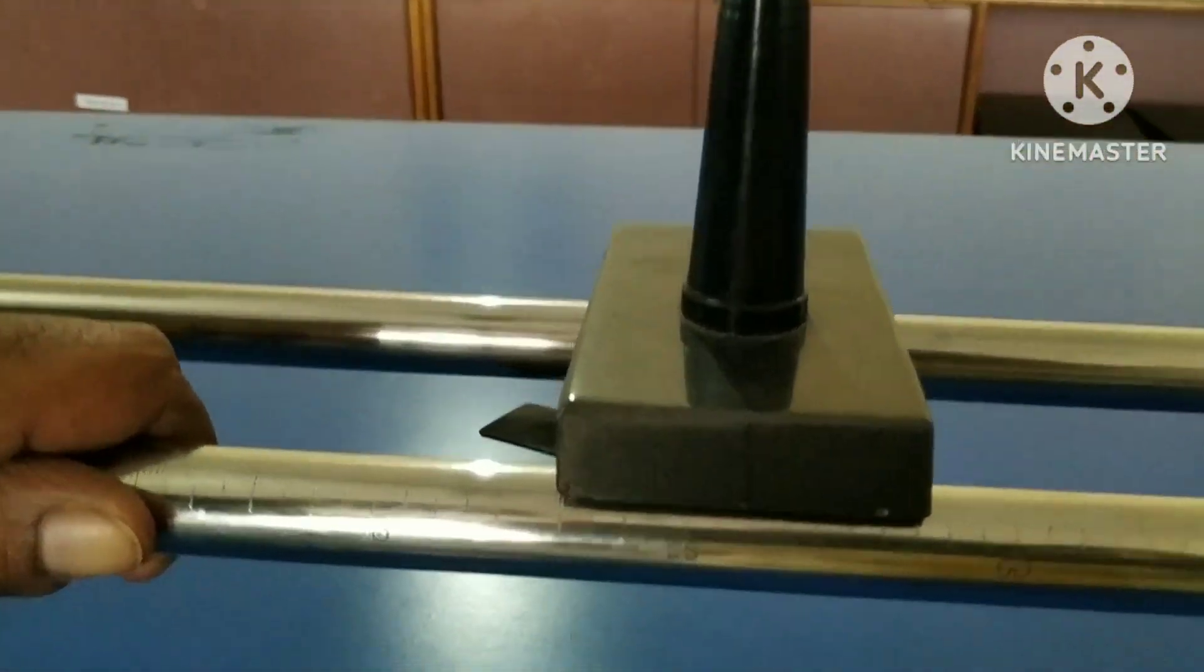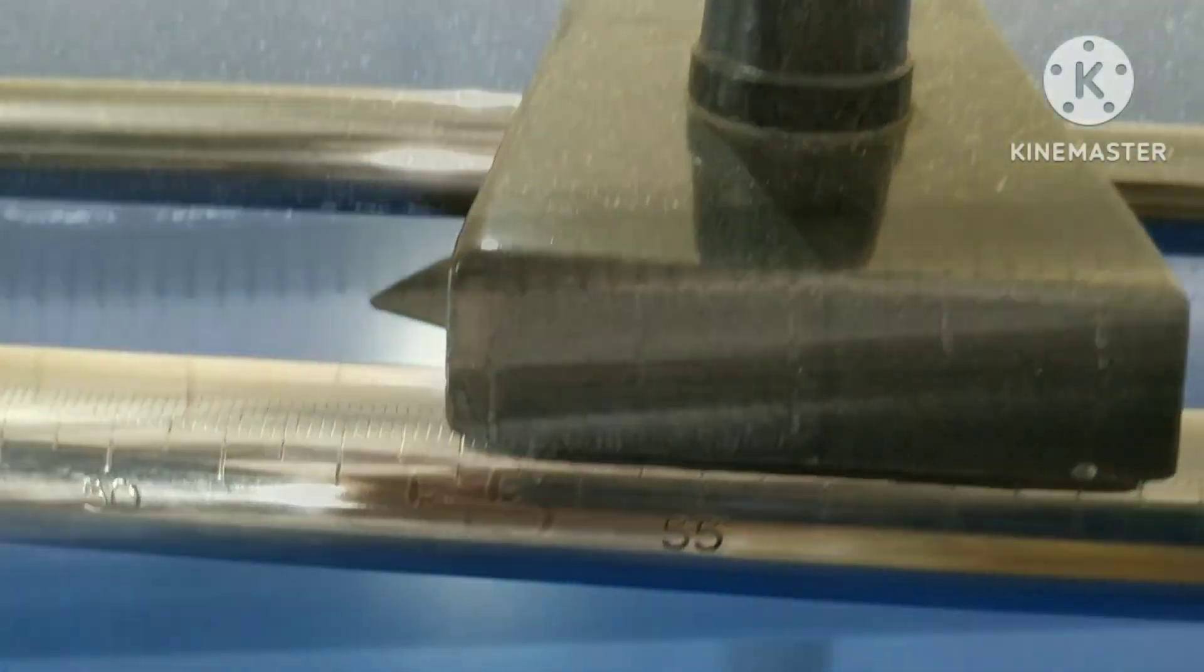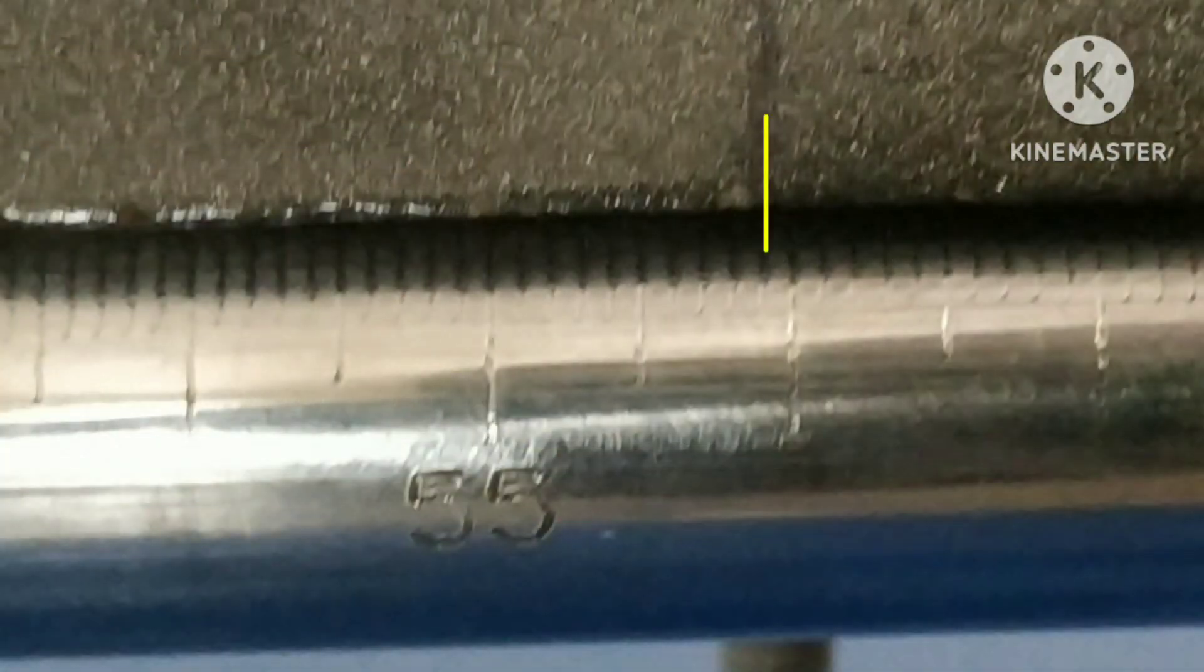That means parallax error is removed and this is the position of the pin we need. Here the reading comes to be 55.9 cm.